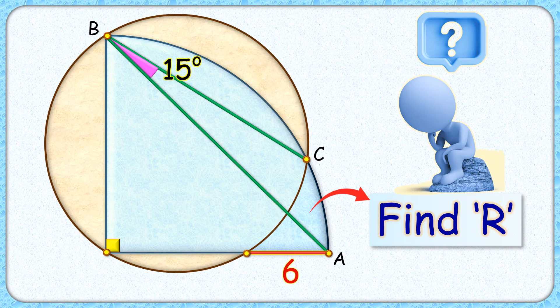Hello everyone, welcome to this interesting question which gives us one more reason to fall in love with geometry. In this question we have a circle and a quadrant. The angle made by the line segment BC and BA is 15 degrees, and the length of this red line segment is 6 centimeters. The exciting part is that with this limited data, without using any calculator, we have to find the radius of the quadrant.